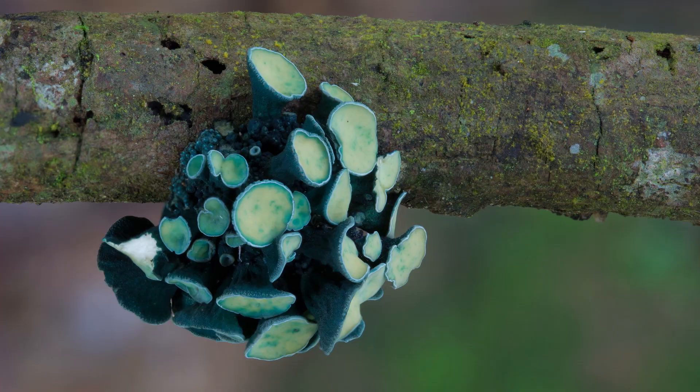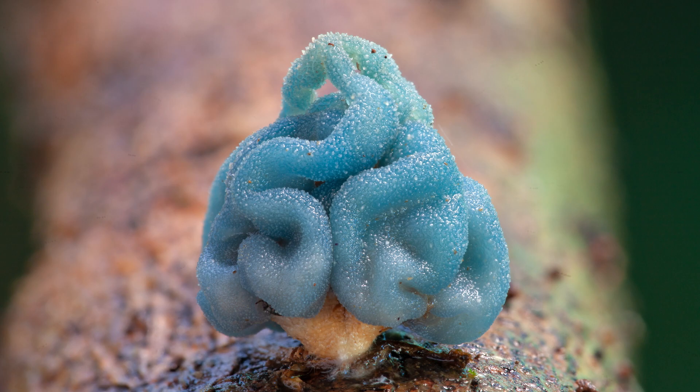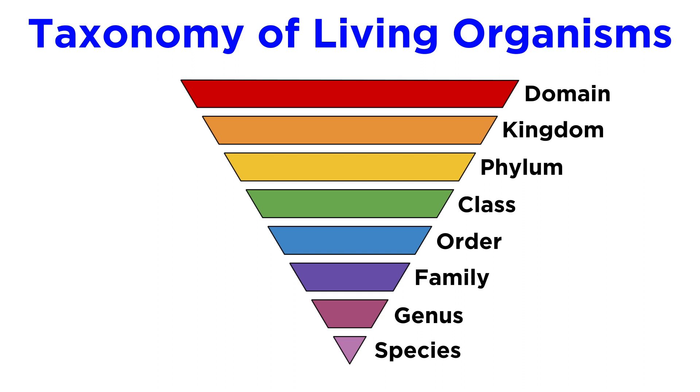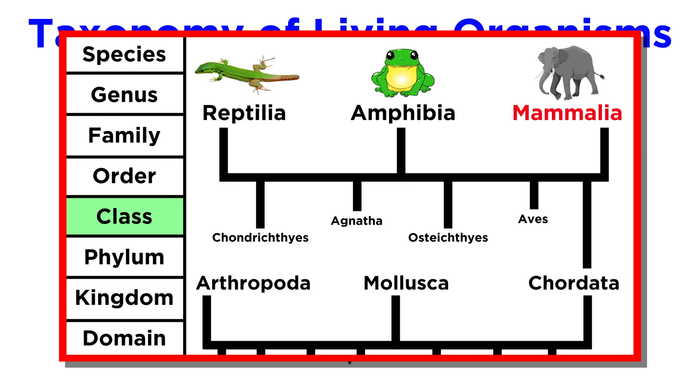There are more than 120,000 species of fungi that have been classified by mycologists. In order to understand how they make sense of all these species, it is essential to understand the modern system of biological classification called taxonomy.